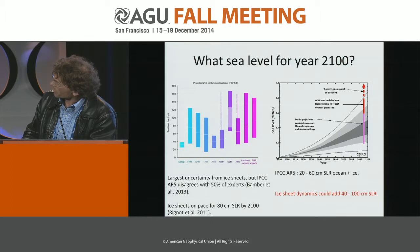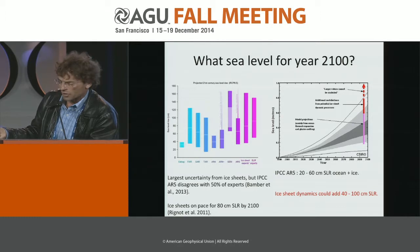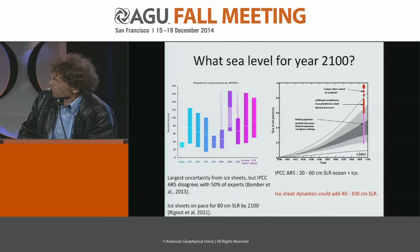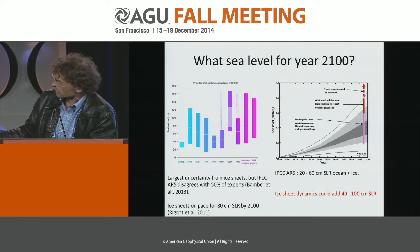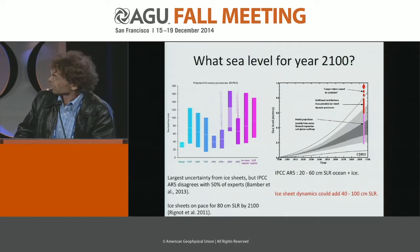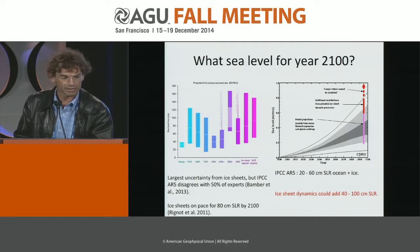What's sea level for 2100? The IPCC has projections, and some of these projections are evolving. They've been evolving into lower projections until the last report, and now the projections are going up, mostly because we have observations pointing out that the models have deficiencies. In 2013, most of the models disagree with the experts' opinion. IPCC projects 20 to 60 centimeters of sea level rise by 2100. The ice sheets could easily add 40 to 100 centimeters, and they're already on pace for 80 centimeters.